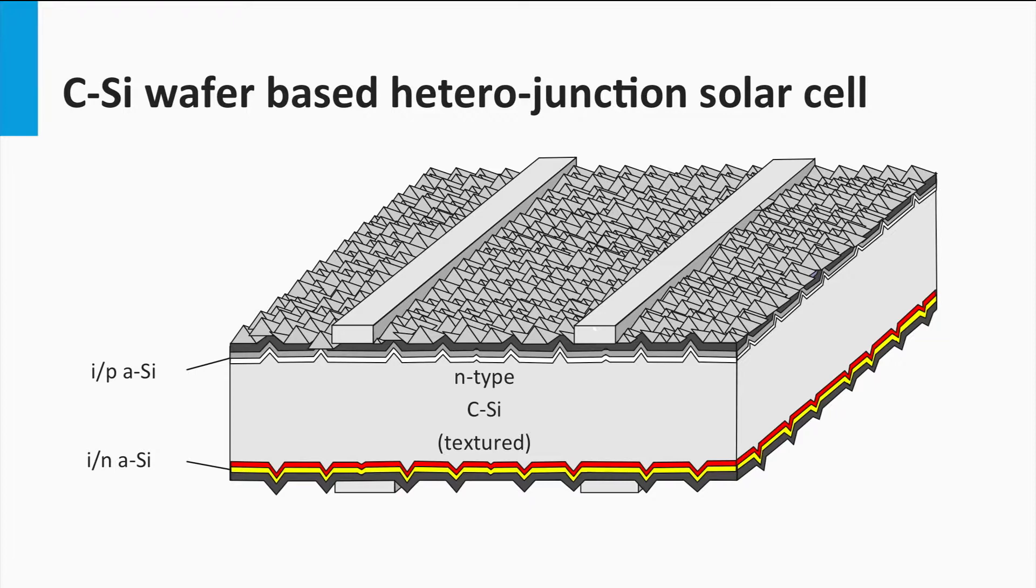The crystalline silicon wafer-based heterojunction solar cell has the highest achieved open-circuit voltages among the crystalline silicon technology. Panasonic achieved an open-circuit voltage of 750 mV.